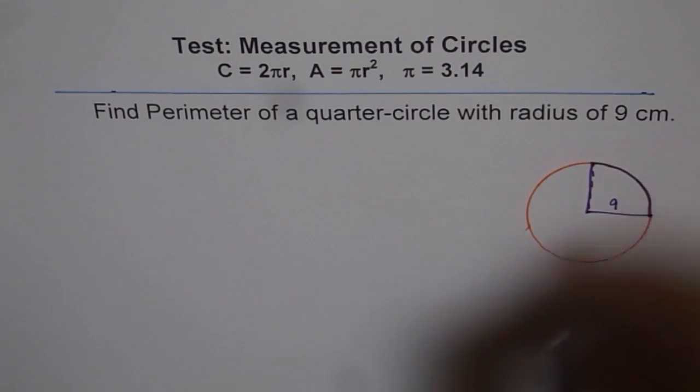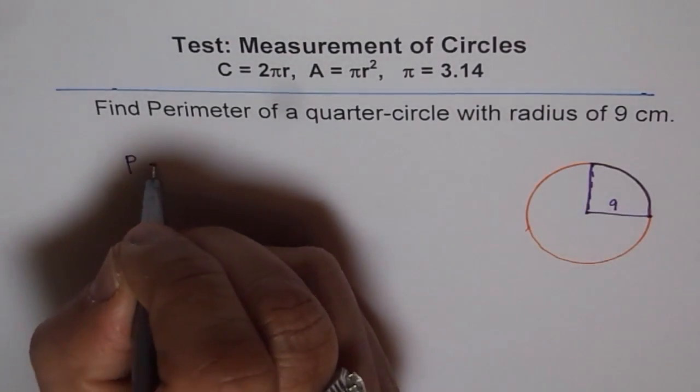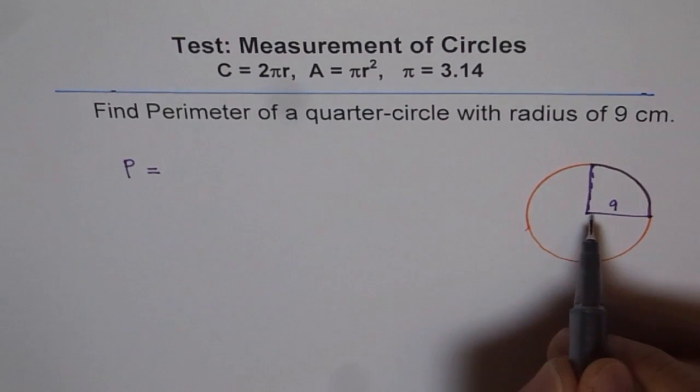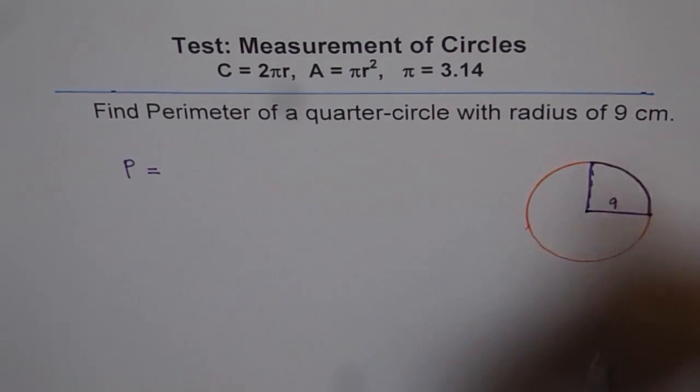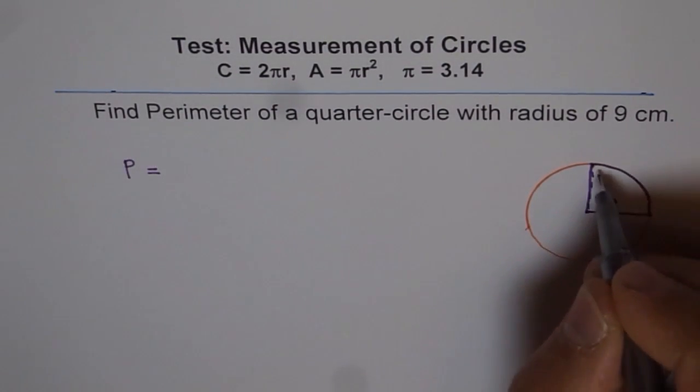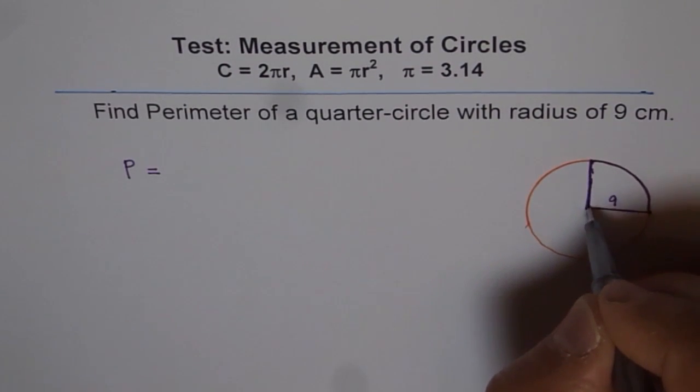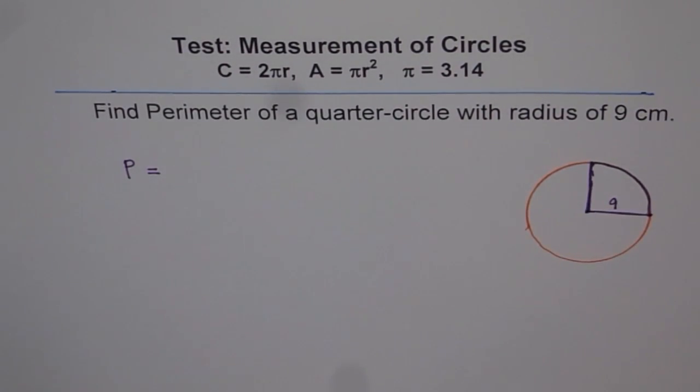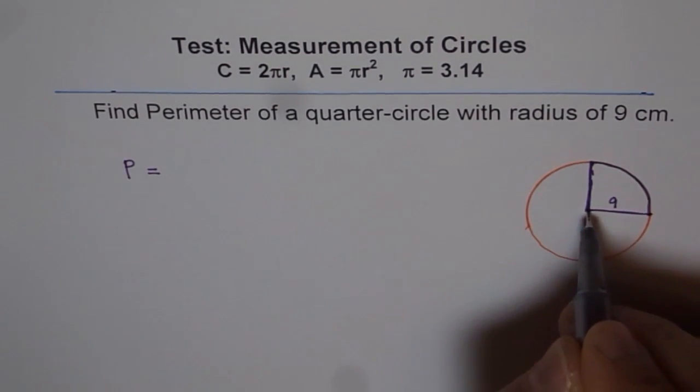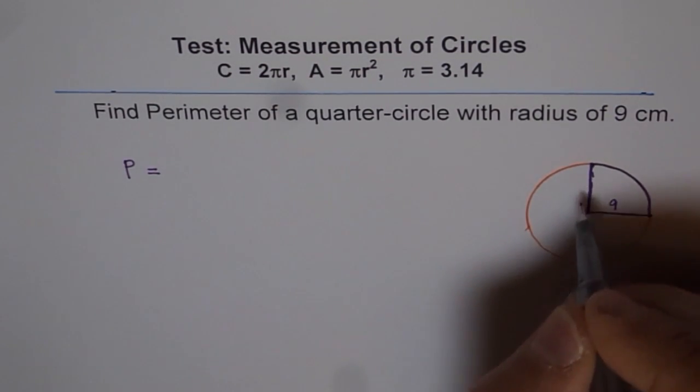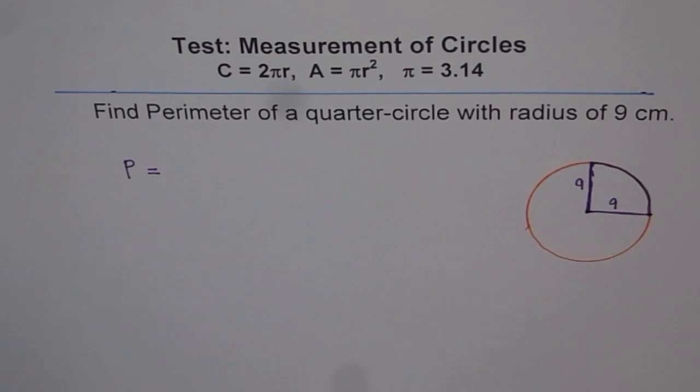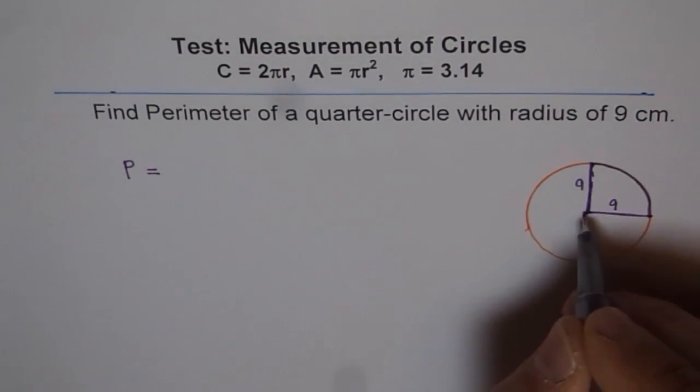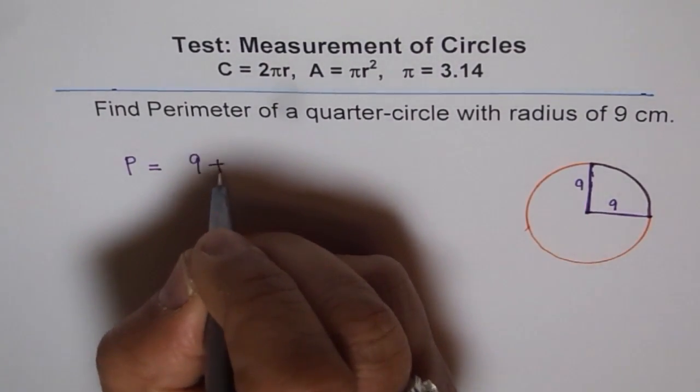So the perimeter for quarter of the circle will be perimeter P equals to this length, right? Most of the students, they forget about these lengths. That is why I am asking this question here. So we have this length which is 9 cm and the other side is also 9. So we have 2 sides of the quarter.